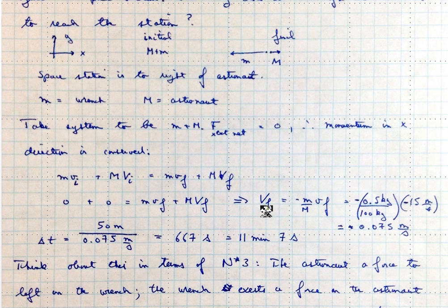So we can solve for the final velocity of the astronaut. I'm using big V and big M for the astronaut, little M and little V for the wrench. And so putting the numbers in as 0.5 kilograms over 100 kilograms times minus 15 meters per second, the wrench is going to the left, which we're going to book keep as the minus direction.